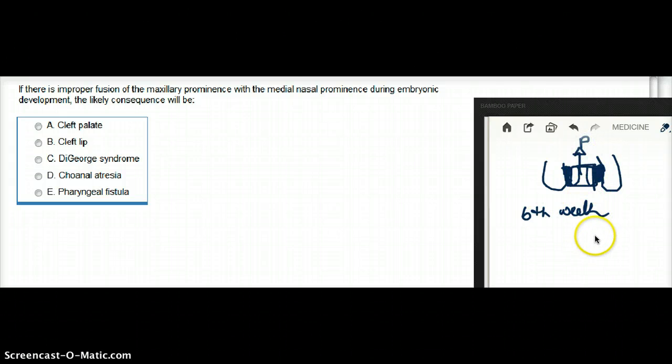Other than the philtrum, this part will also give rise to four medial maxillary teeth and the primary palate. So this intermaxillary segment gives rise to the philtrum, four medial maxillary teeth, and the primary palate.